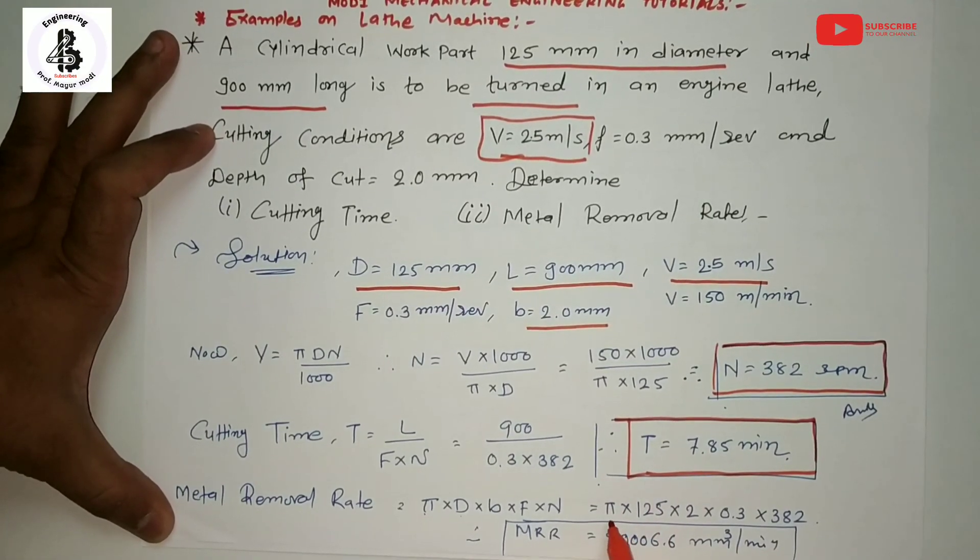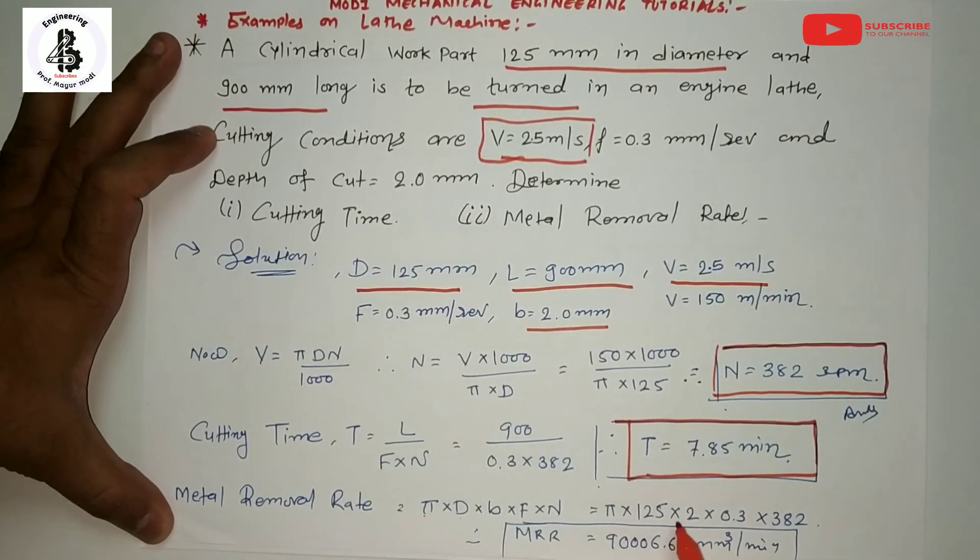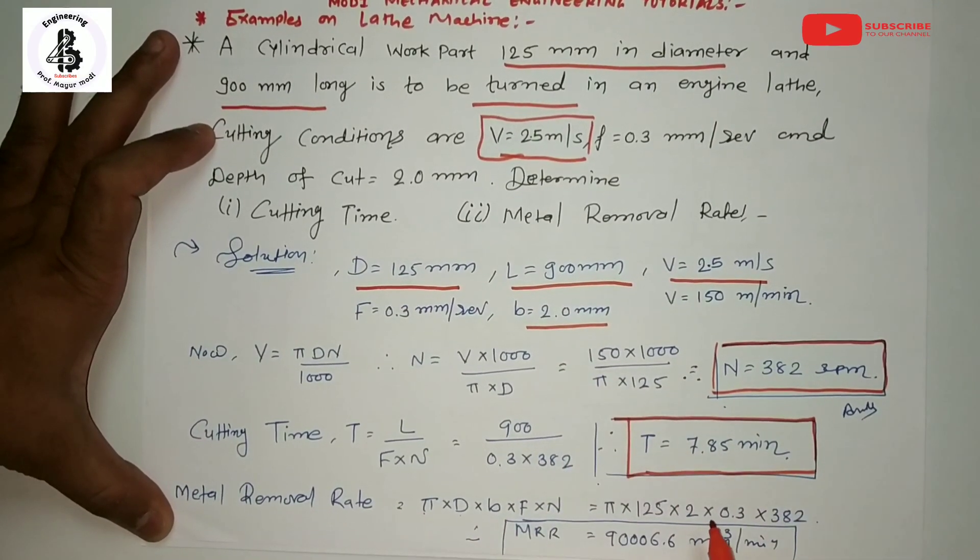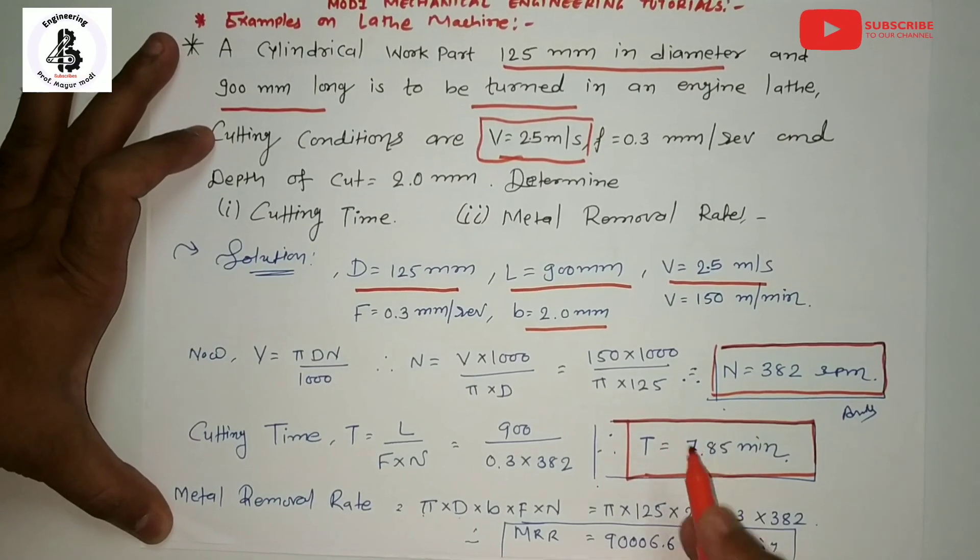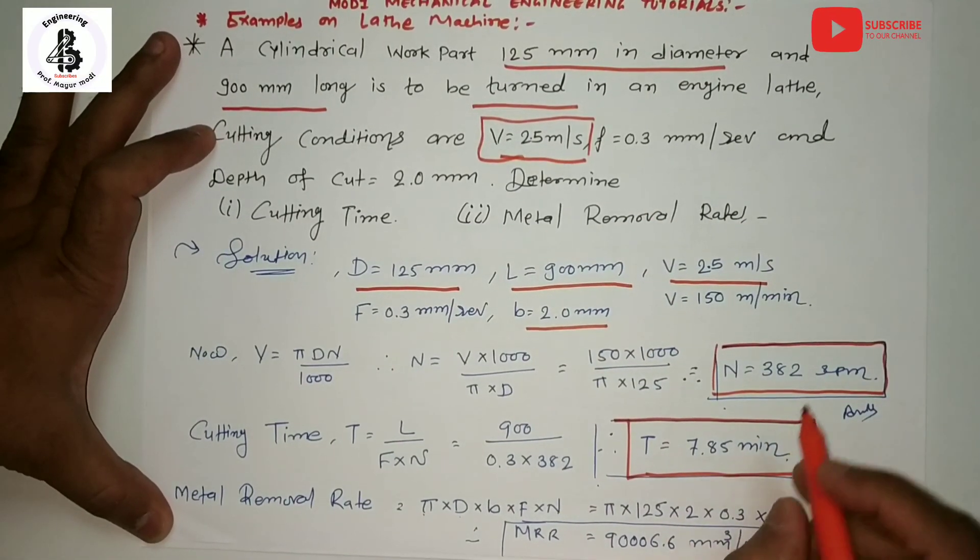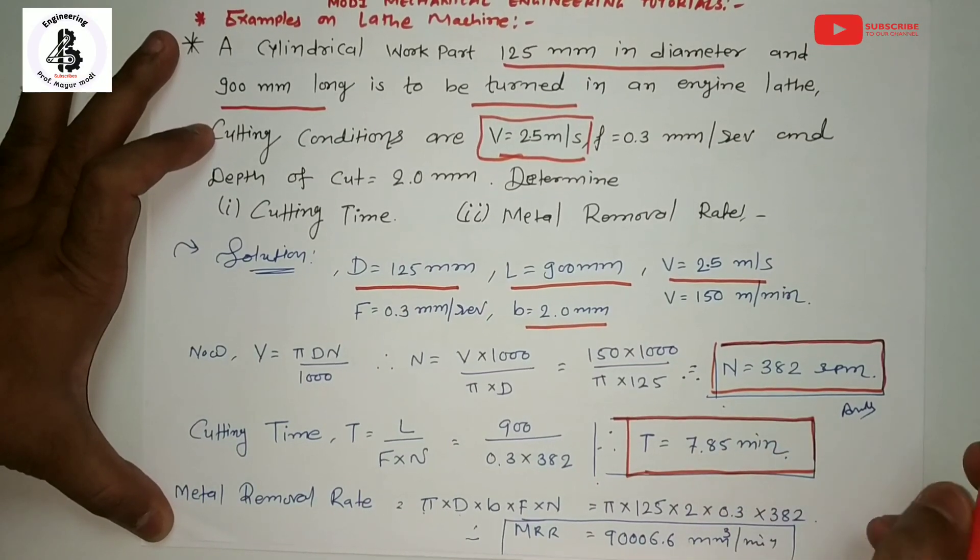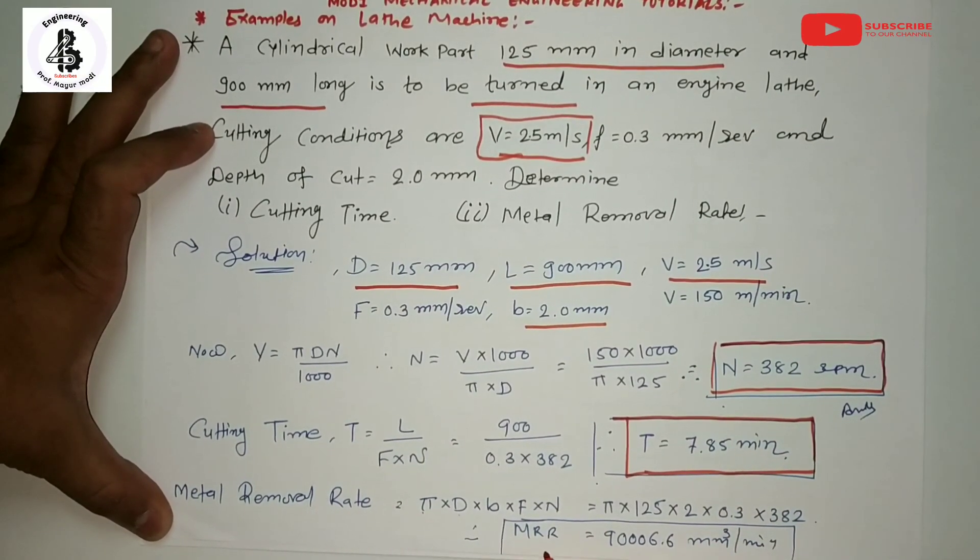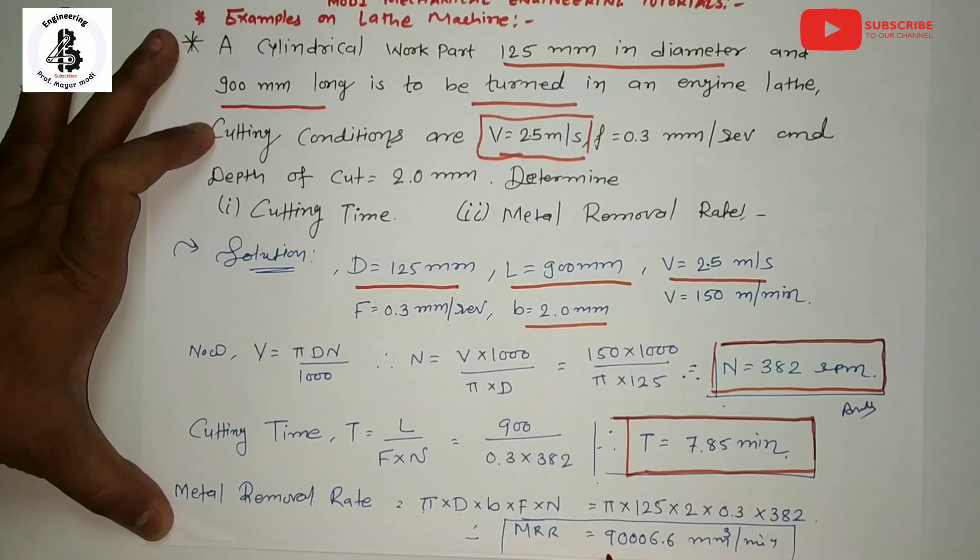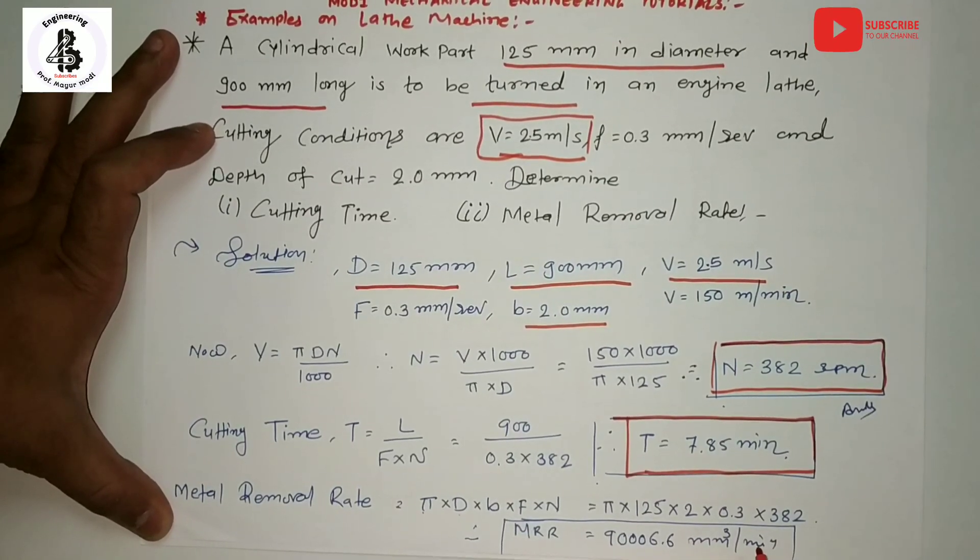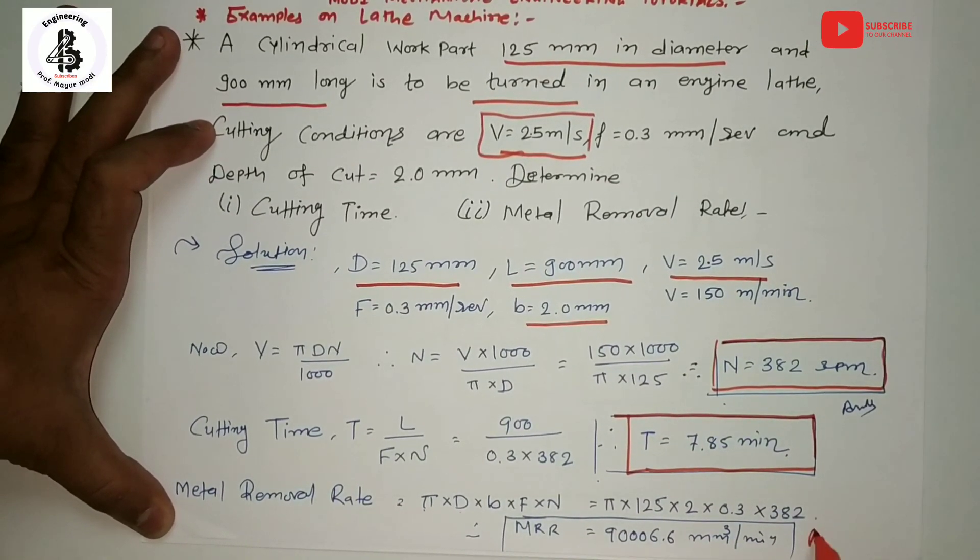π × D = 125 × B (depth of cut) × feed = 0.3 mm × RPM = 382 from answer number 1. So you will get the answer MRR for the turning operations: 90006.6 mm³ per minute. That will be answer number 3.